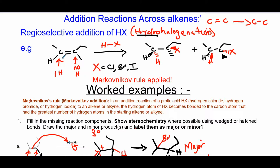Whenever you're adding HX — X being Cl, Br, or I — the hydrogen goes to the sp2 carbon of the alkene that is least substituted or that has more hydrogen atoms. If you compare the two sp2 carbons, one has no hydrogens — it's mostly substituted — while the other has one hydrogen, so it receives the hydrogen from HX, and the other receives the halogen. That's regioselectivity.